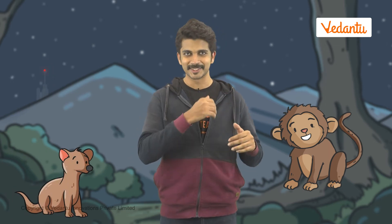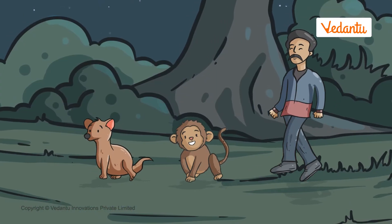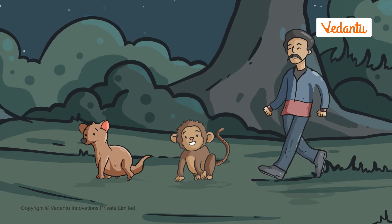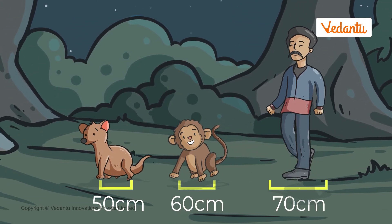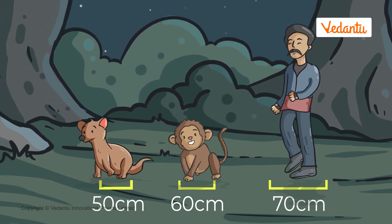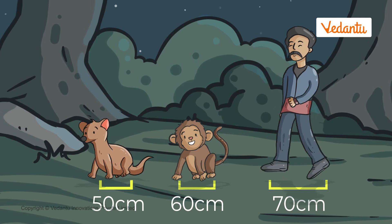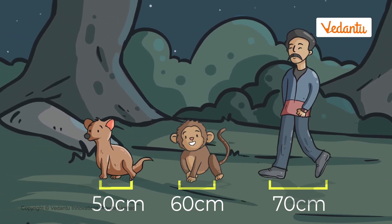It looks like they're responding to our signal — they must need help. We must go and investigate. Looks like Popcorn has made a new friend. Let's go, we have a long walk ahead of us. Let's find a way to make it interesting. The three of us will walk in the same direction from the same starting point. The sizes of our steps are on this table. What is the minimum distance we should walk for our steps to line up? Since we are taking the same steps every time, the minimum distance must be the LCM of 50, 60, and 70.